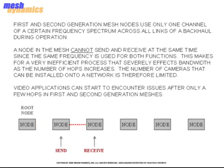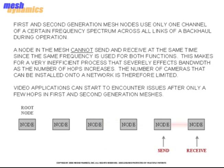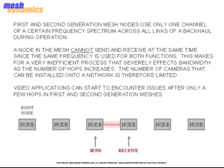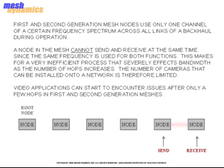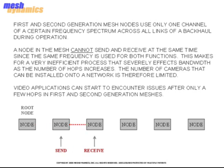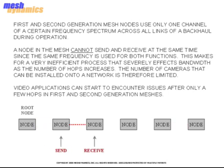First and second generation mesh nodes only use one channel of a certain frequency spectrum across all lengths of a backhaul during operation. A node in the mesh cannot send and receive at the same time since the same frequency is used for both functions. This makes for a very inefficient process that severely affects bandwidth as the number of hops increases. The number of cameras that can be installed onto a network is therefore limited. Video applications can start to encounter issues after only a few hops in first and second generation meshes.